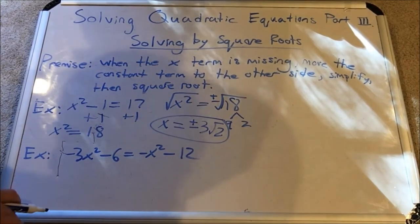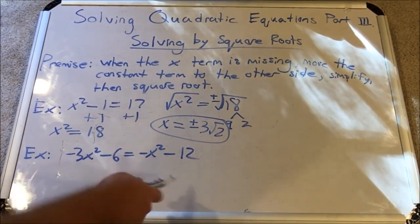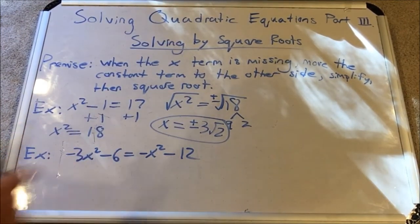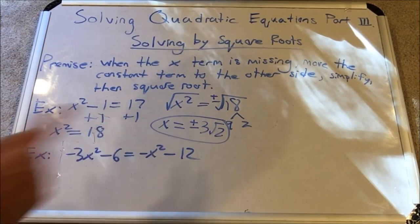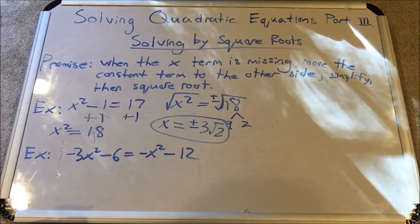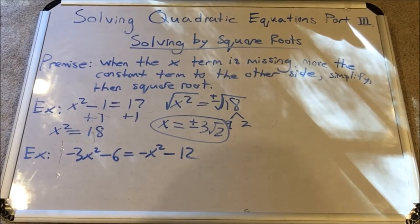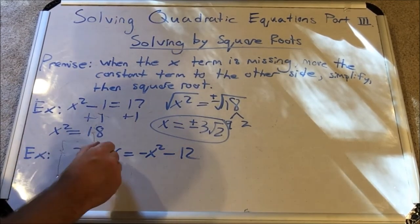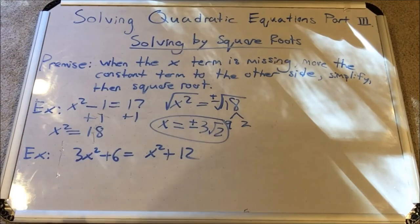Now let's try this more complicated one. As you can see I've got x squared terms on both sides and constant terms on both sides.